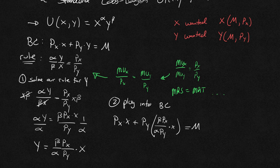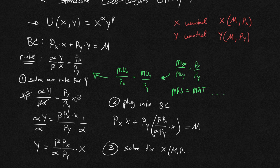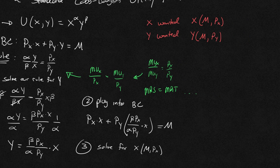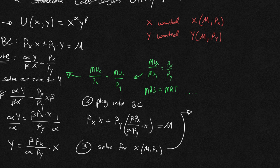And then my step three is going to be solve this one for x, which will be the demand curve. So x as a function of m and px. So what do I notice? Well, if I'm given px times x plus py times beta px in the top, alpha py in the bottom, times x equals m.